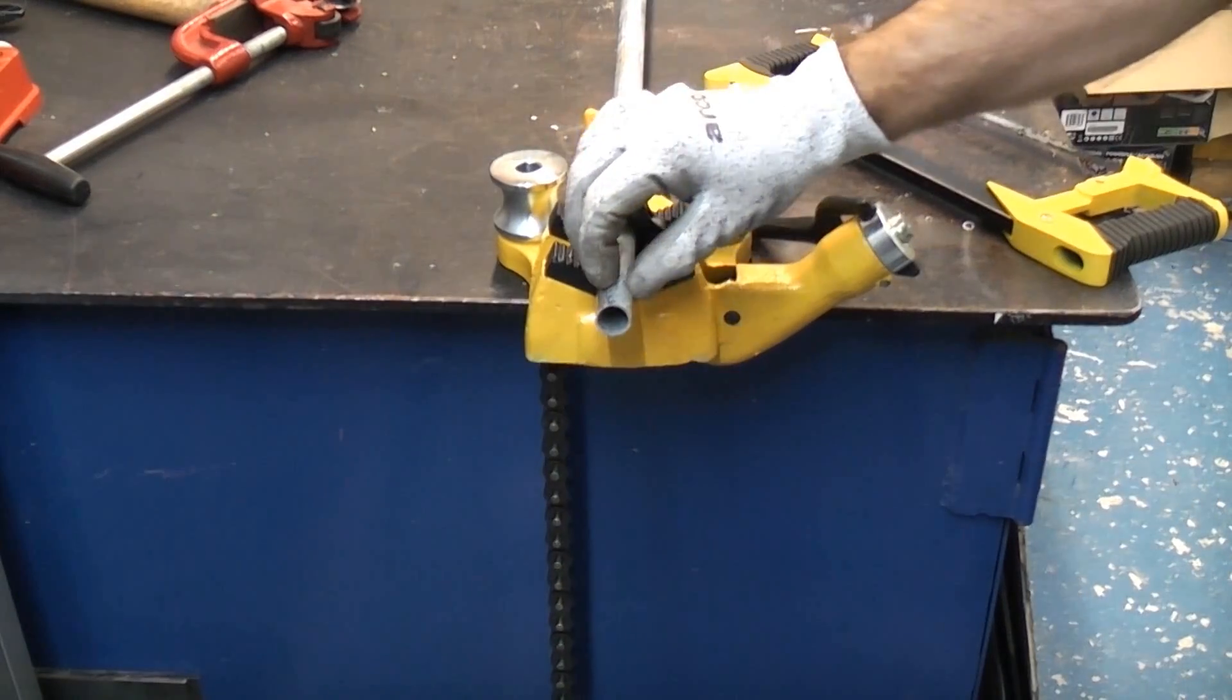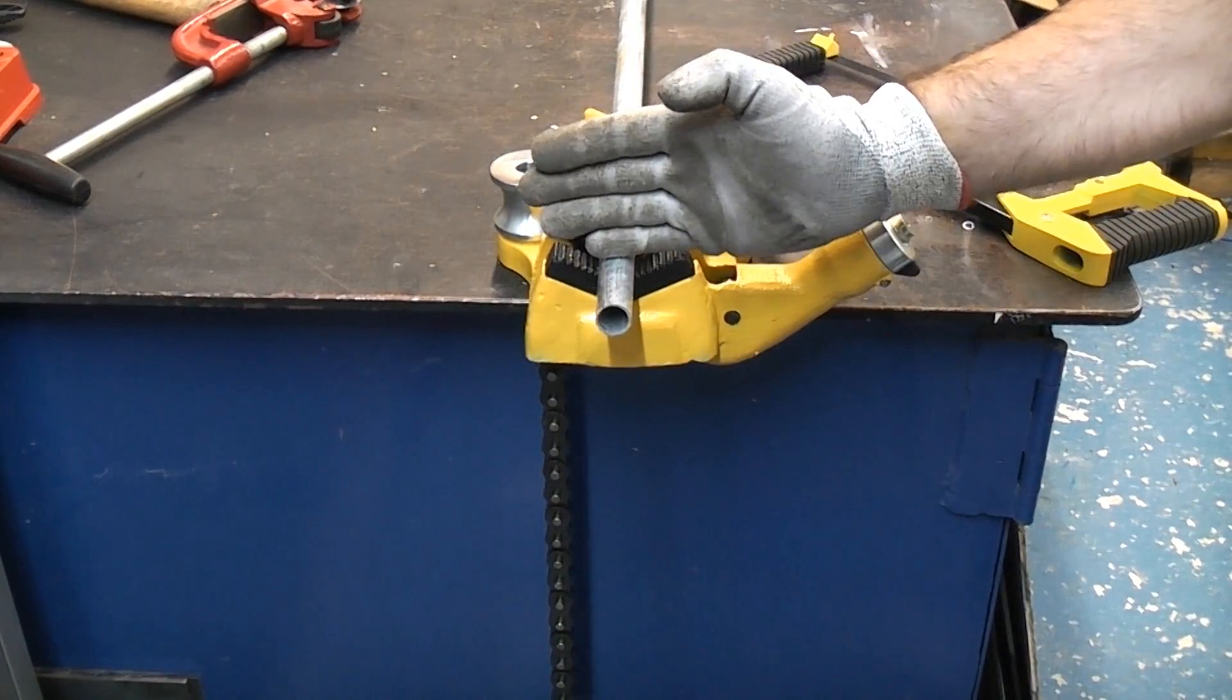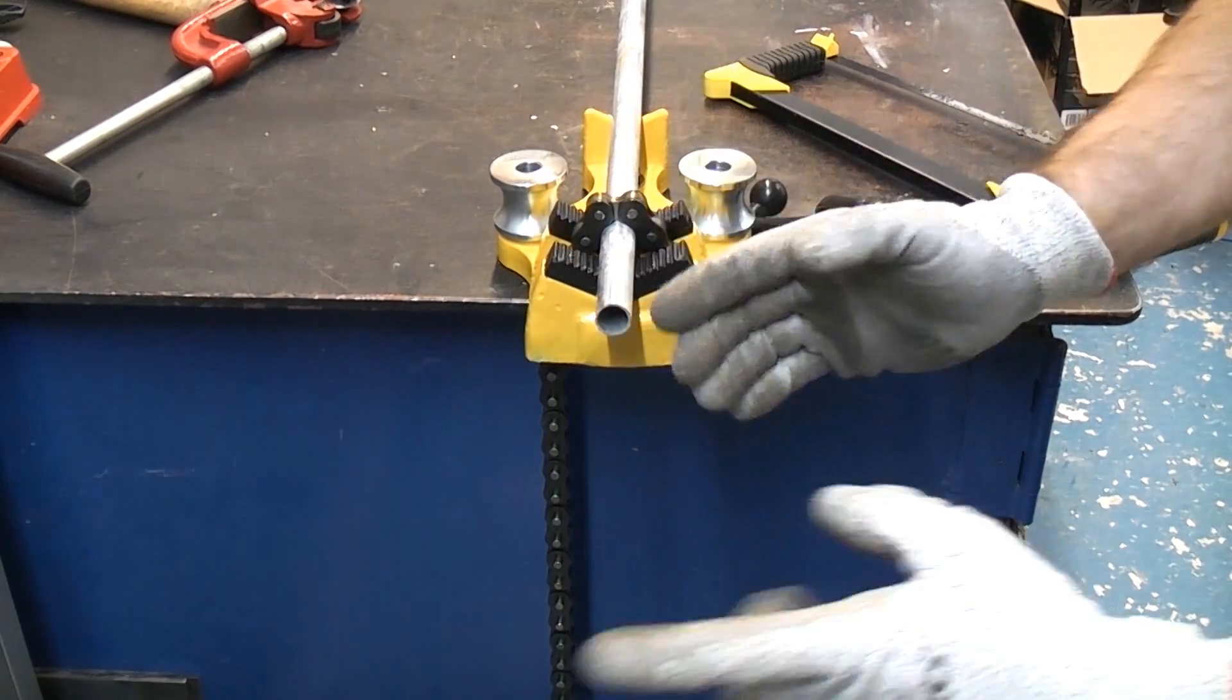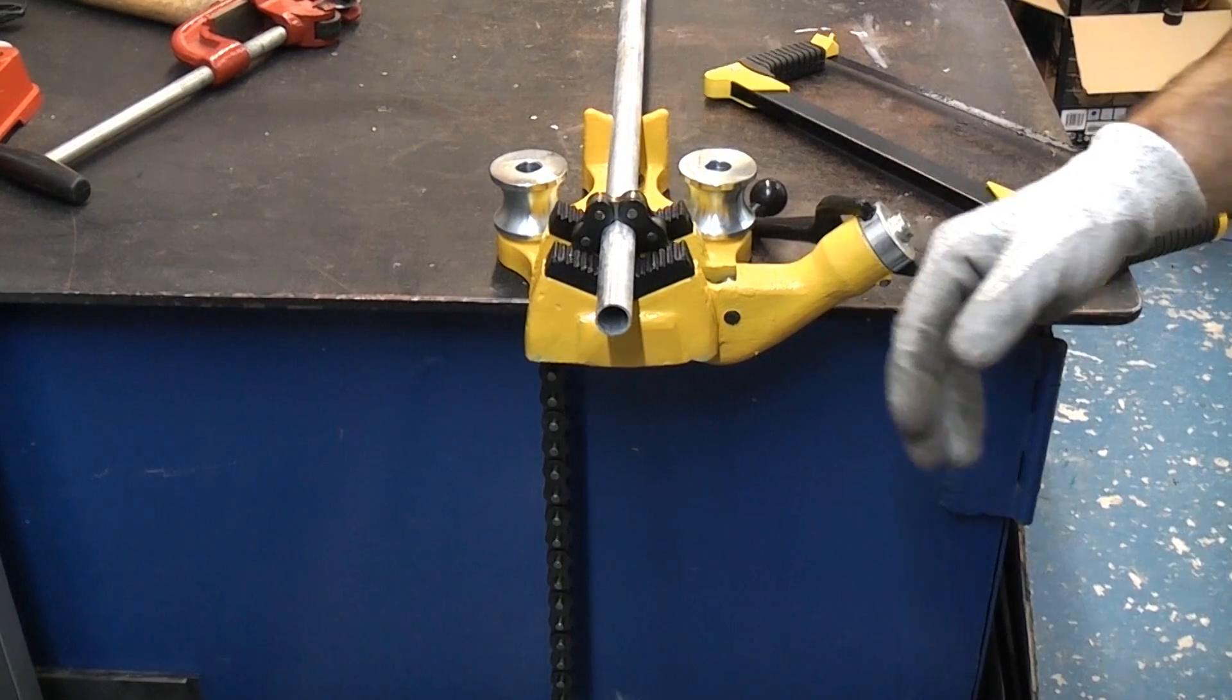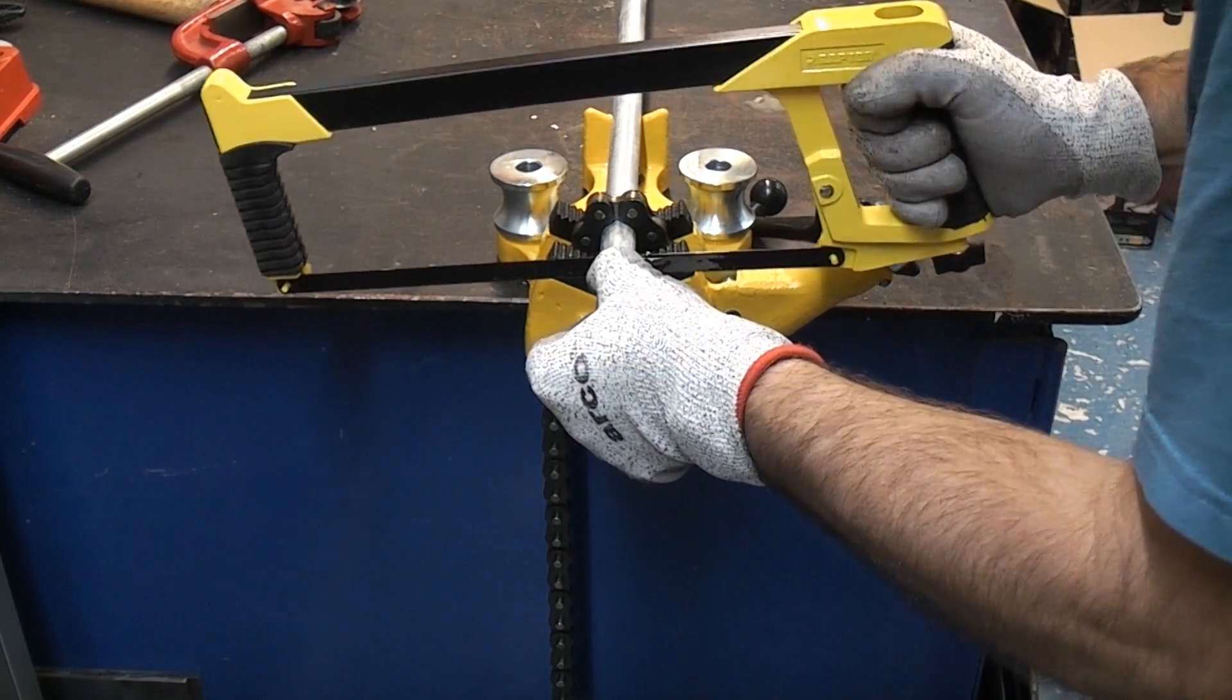If you do cut this using a hacksaw it's important that you get it as close to the vise as possible. You don't want to be cutting it away from the vise because you will get a lot of vibration. Let's get that started.